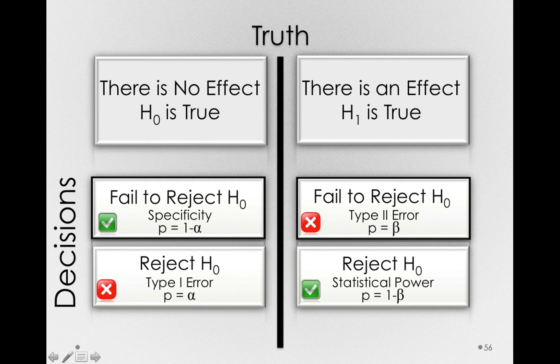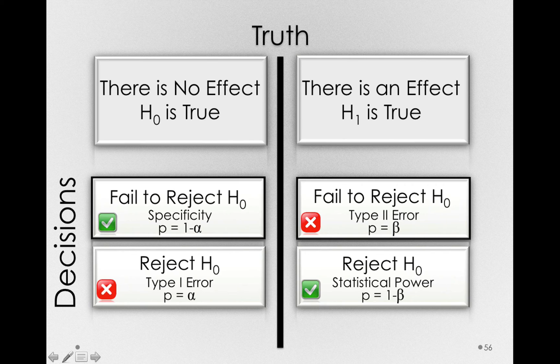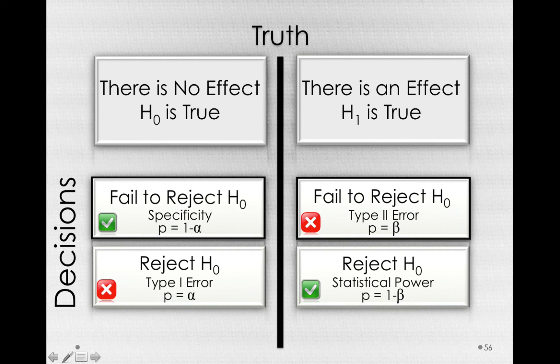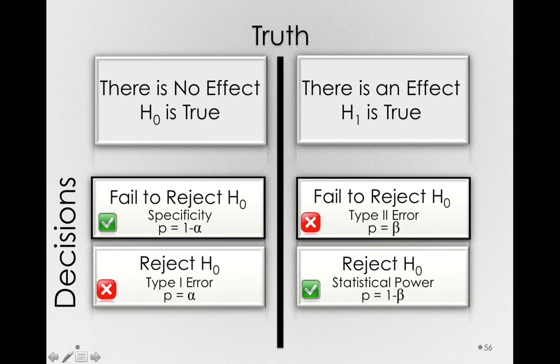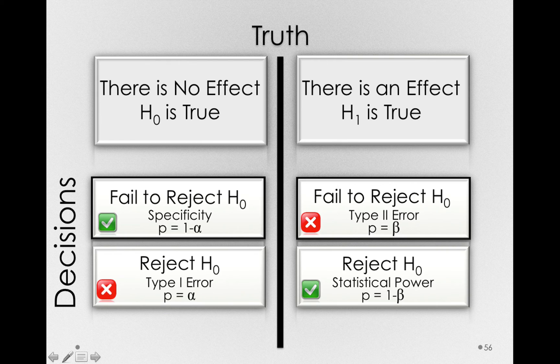Well, going back to our decision table, notice that when we had a false alarm, we knew something about that probability. We knew the probability was alpha if the null is true, that we would false alarm. We knew that probability was alpha because that is under our direct control. Alpha is something, as researchers, we specify. So we know the value ahead of time. We don't need to know anything else about the world. And we can say, if there really is no effect, we will false alarm with a proportion of the time exactly equal to alpha.